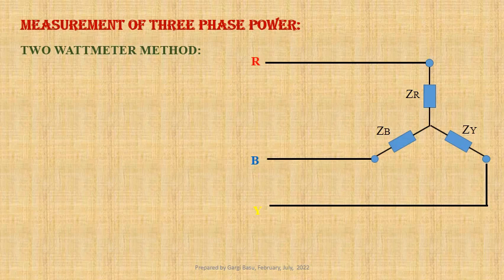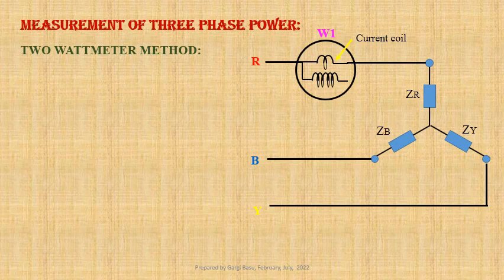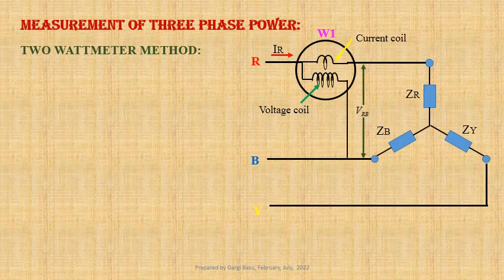If the current coil of wattmeter 1 is connected in R phase, the current flowing through the current coil is IR. If the pressure coil of wattmeter 1 is connected across R and B phase, the voltage drop across the voltage coil is VRB. Hence, the reading of wattmeter 1, P1, equals VRB times IR times